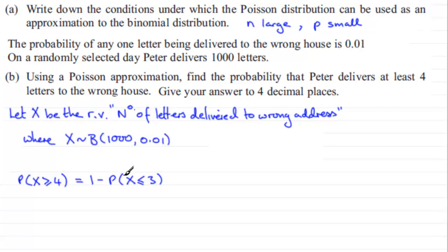Remember, one would be all the possibilities. But this has got an infinite number of probabilities here. X can be four, five, six, seven, and so on. So the only way round this is to do one, all the possibilities, minus the ones less than or equal to three. That's 0, 1, 2, and 3.